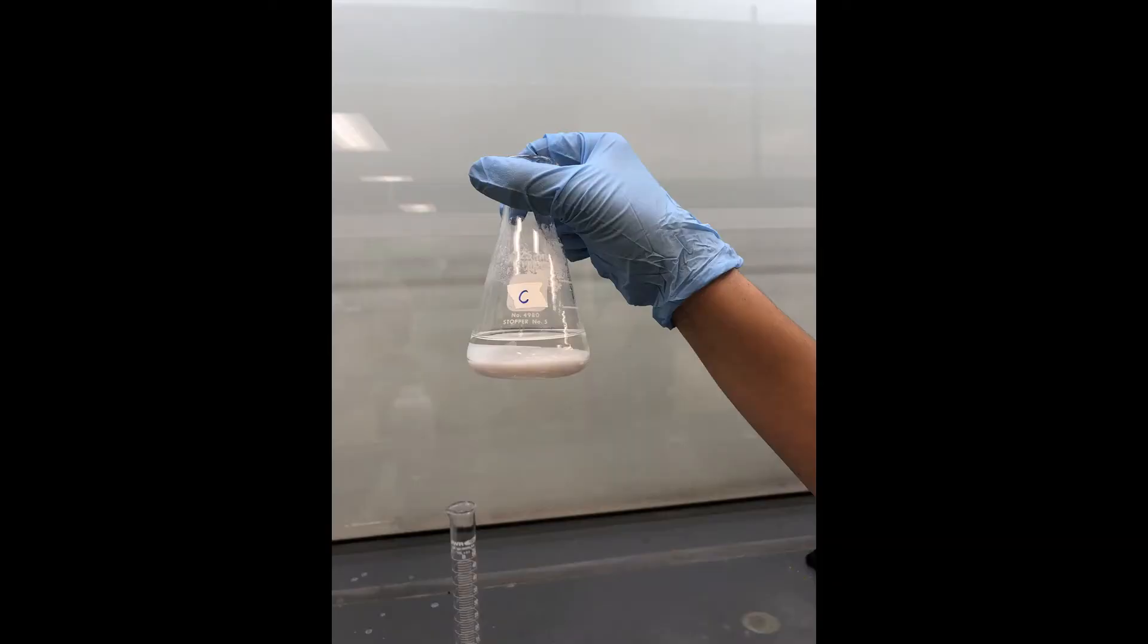Later, you will filtrate the contents of flask C out by pouring the mixture through a glass filtration funnel with cotton into a round bottom flask to be rotavapped later.